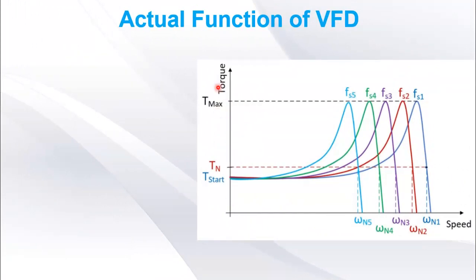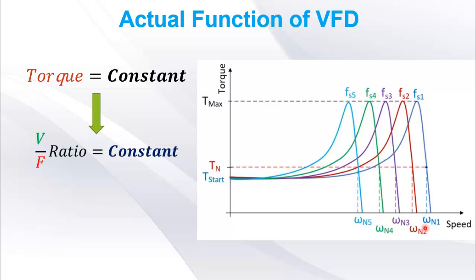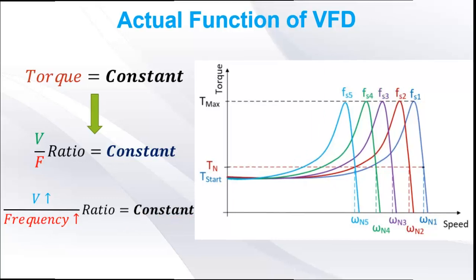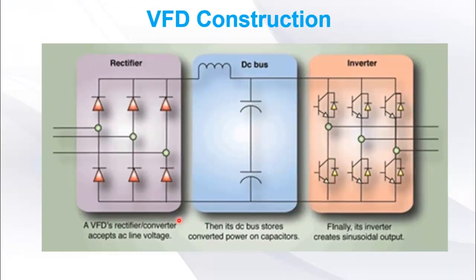Here we can see constant torque can be generated at different speeds by keeping V over F ratio constant. In other words, in order to increase the speed, we have to increase the frequency and supply voltage at the same time to keep V by F ratio constant. And this is the main function of variable frequency drive.